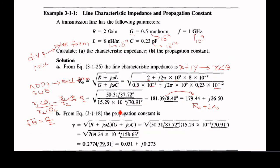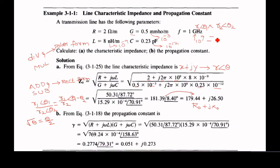You simply have to substitute the given values in the formula. The propagation constant is nothing but the square root of (R plus j omega L) into (G plus j omega C). Here we are multiplying, so that's why these are converted into polar form. Whatever results you got when converting rectangular to polar — for both factors — you can straightaway substitute here. When multiplying two polar numbers, r1 at an angle of theta 1 multiplied by r2 at an angle of theta 2, the result will be r1 r2 at an angle of theta 1 plus theta 2 — you simply add the angles.